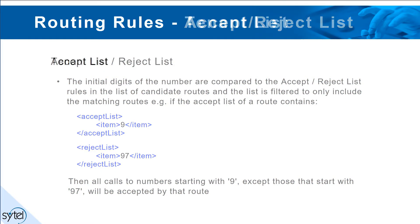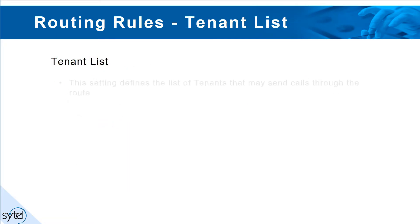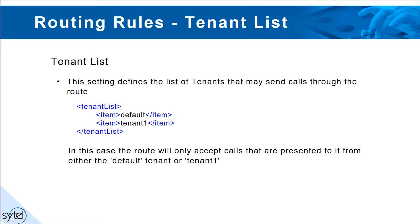Tenant list: you can define which tenants use a particular route with this setting. In this case, the route will only accept calls from tenant default or tenant 1.